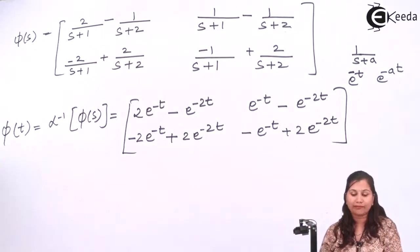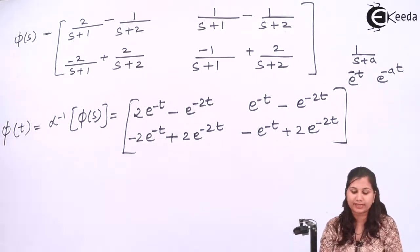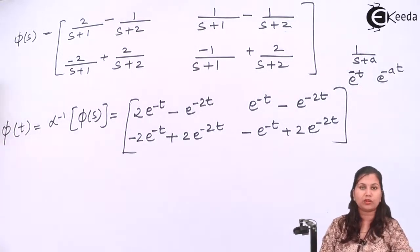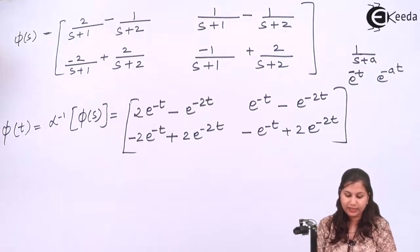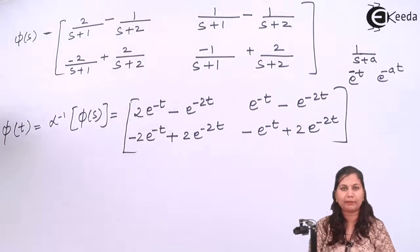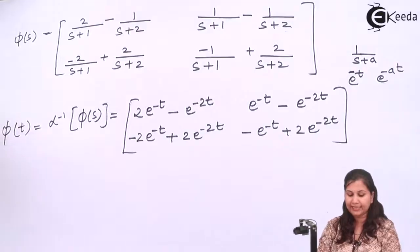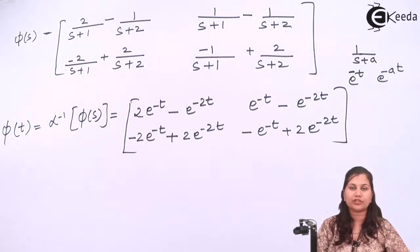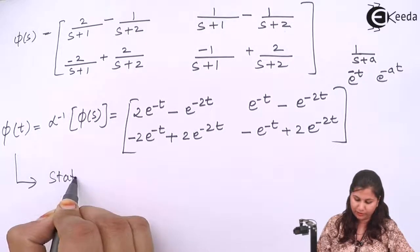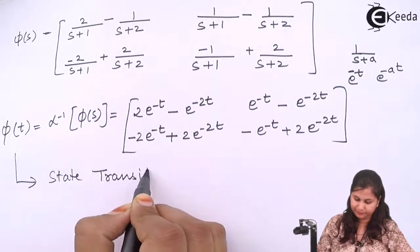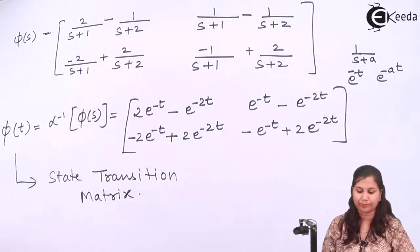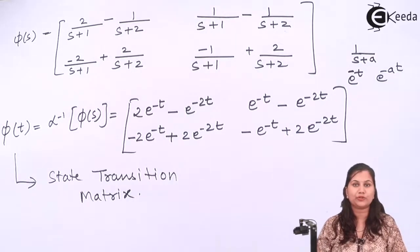So we have obtained the state transition matrix in both the s-domain and the time domain. We factored the denominator, applied partial fractions, and then applied the inverse Laplace transform formulas to get φ(t). This is our state transition matrix, also called the resolvent matrix. I hope this problem is clear to you, thank you.